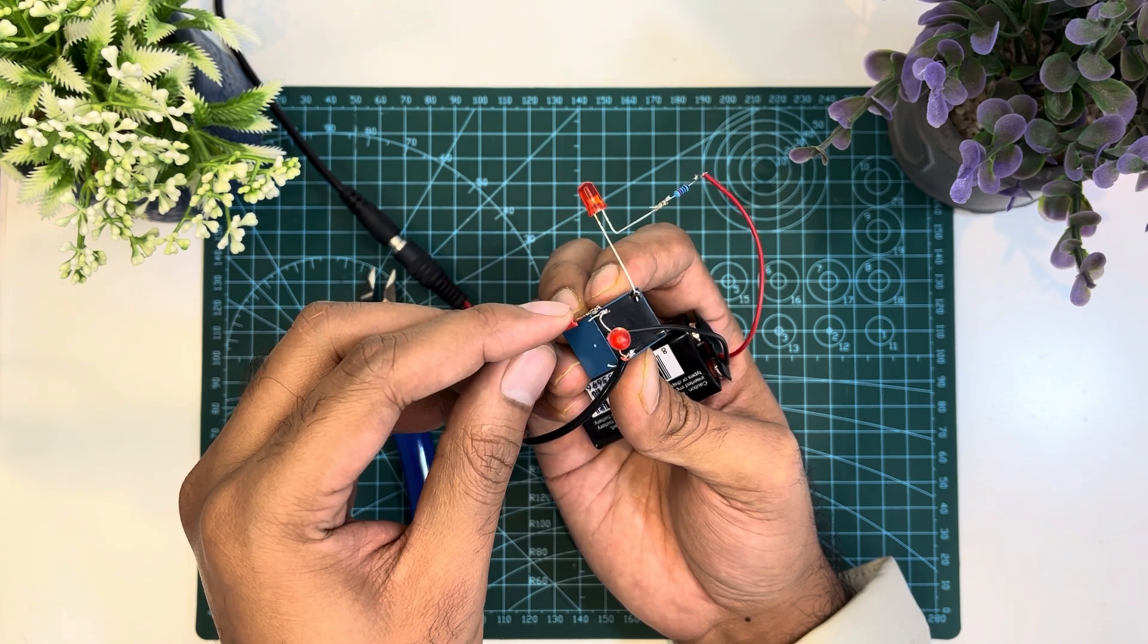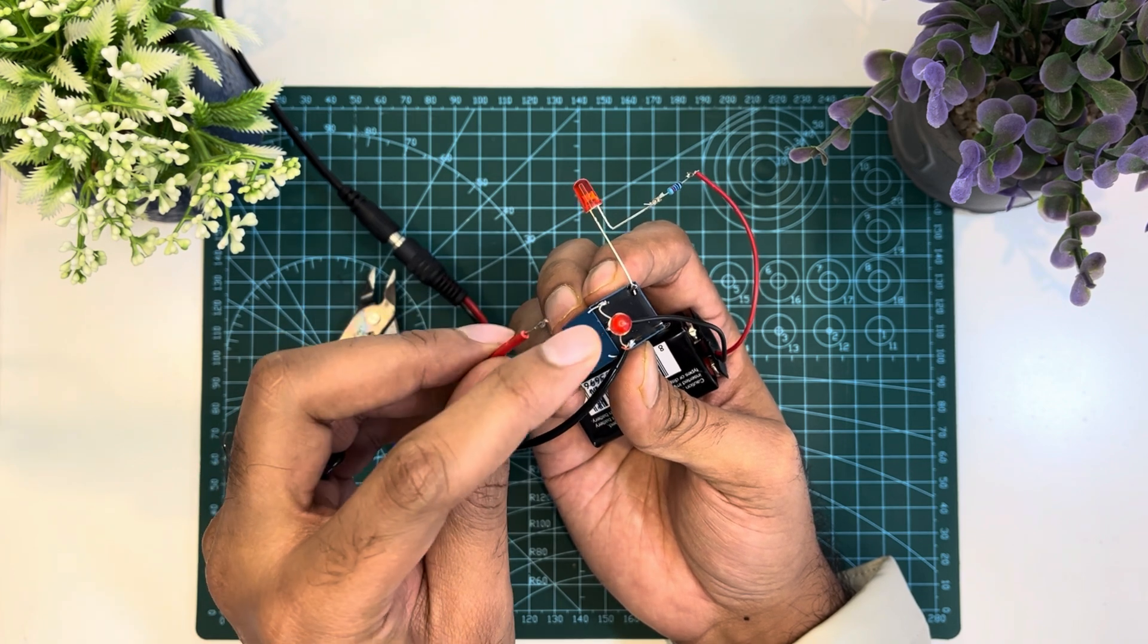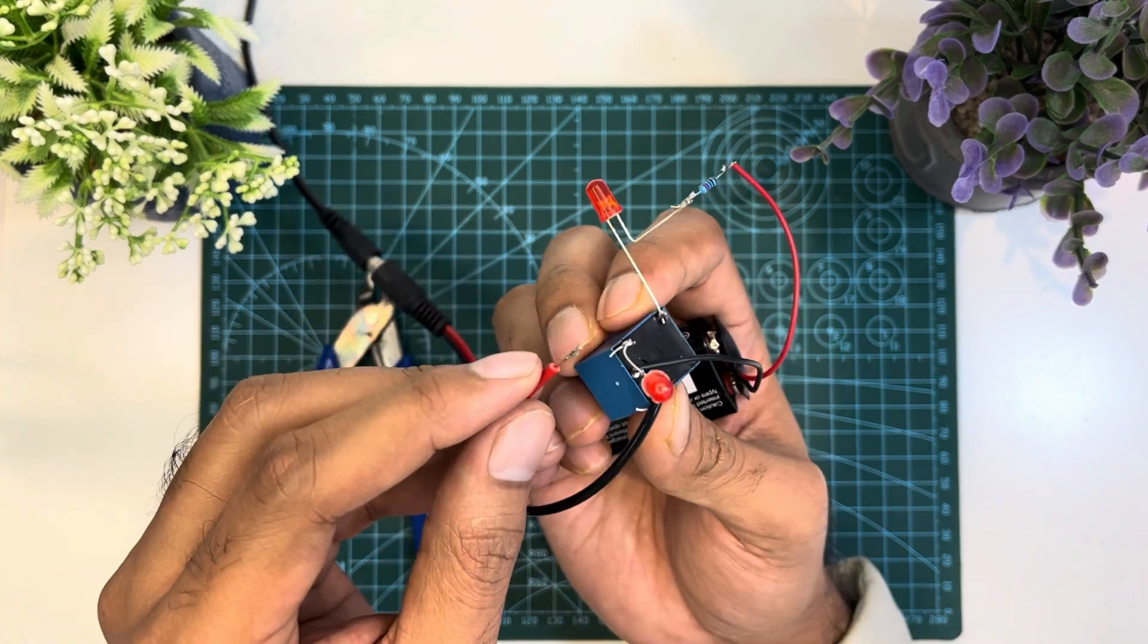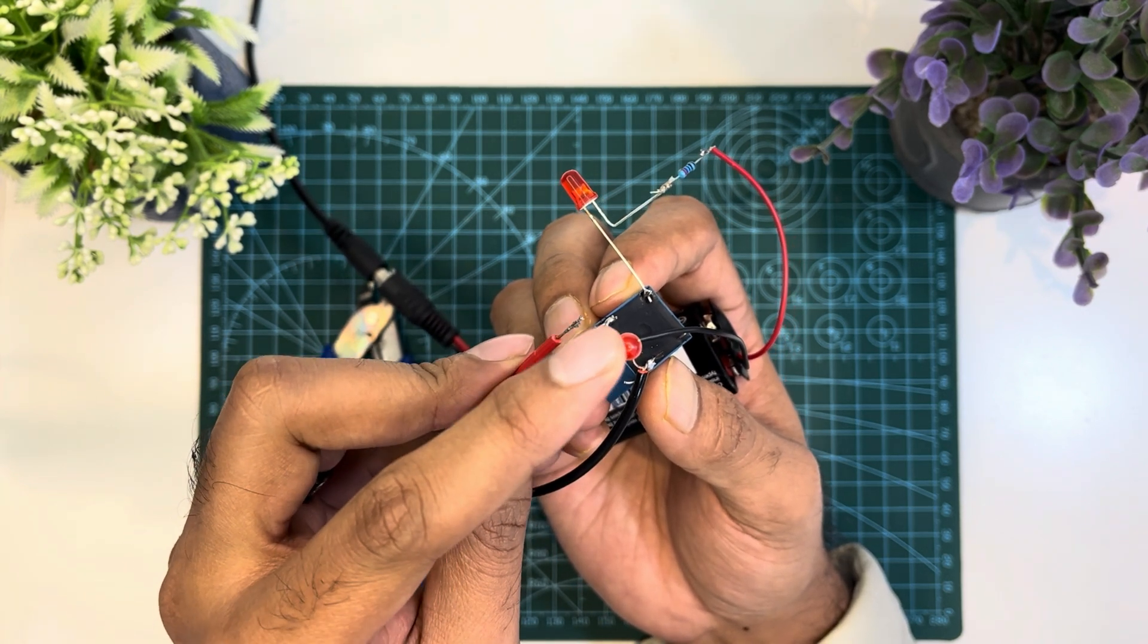This happens because of back EMF voltage. When we cut the DC source, this opposite voltage creates a huge voltage peak for an instant. That's why the LED has blinked.